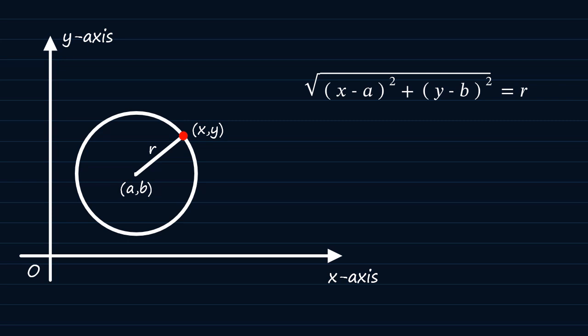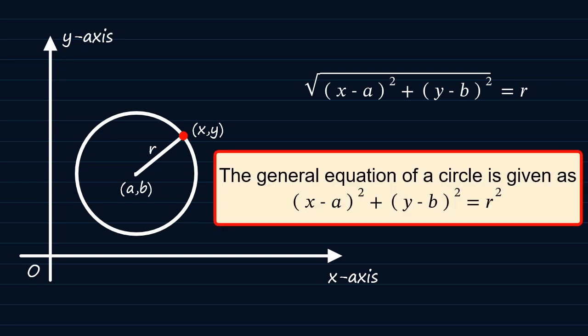I'm sure you remember this from a previous video when I shared with you how to find the length of a line given two points. From this, after squaring both sides, we can come out with a general equation of a circle: (x minus a) squared plus (y minus b) squared is equal to R squared, where (a, b) are the coordinates of the center and R is the radius.